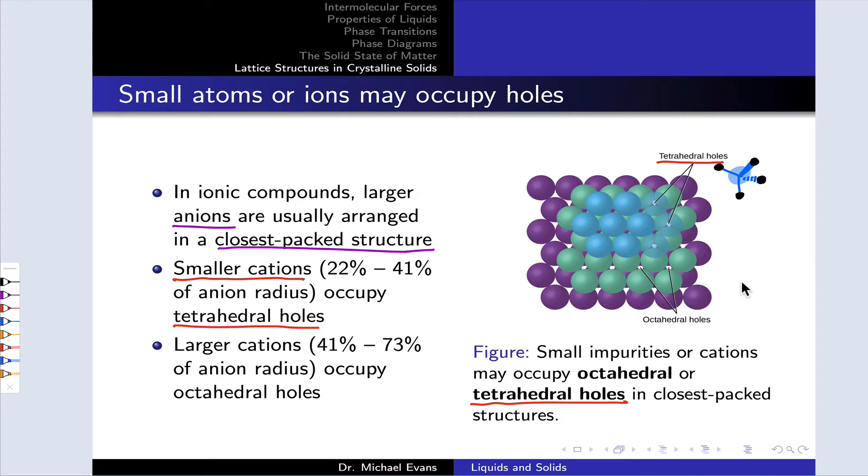These are relatively small spaces, so relatively small cations, something like twenty to forty percent of the size of the anion, occupy these holes. Larger cations cannot fit into the tetrahedral holes.